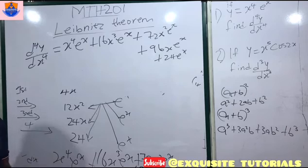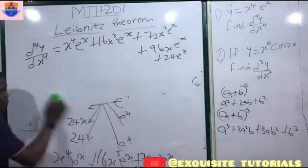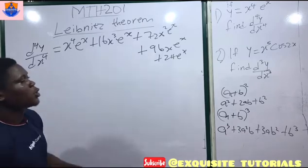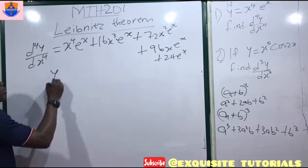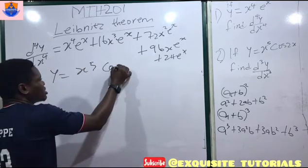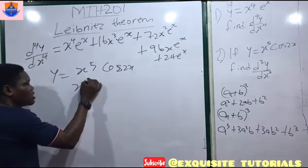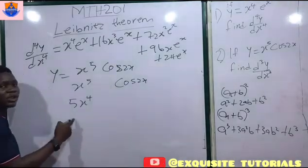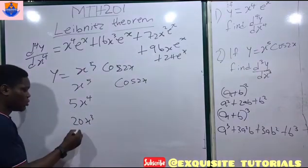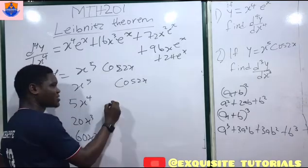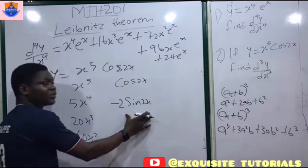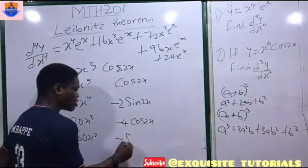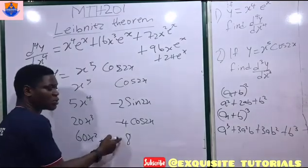That's the answer — and it is much shorter to do it this way than to repeatedly apply the product rule. Let's do the last example. y = x⁵·cos(2x), find the third derivative. Keep u = x⁵ and v = cos(2x). Differentiate u three times: 5x⁴, 20x³, 60x². Differentiate v three times: −2sin(2x), −4cos(2x), then +8sin(2x) (since minus times minus is plus).